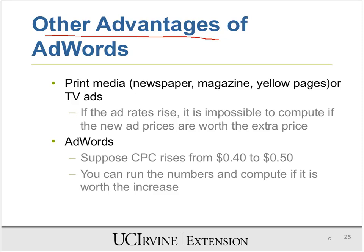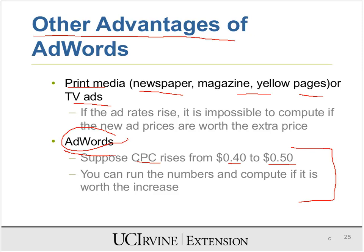You can also look at other advantages of AdWords compared to print media or TV. With print media or TV, if your rates increase, you cannot really compute ROI. But with AdWords, if your CPC cost goes from $0.40 to $0.50, you can immediately compute your ROI and see whether it makes sense. You can very precisely compute whether your ads are working. This feature is not available in any other kind of advertising — whether newspaper, magazine, yellow pages, TV ads, or billboards. AdWords allows you to compute your ROI, and that is one of its major advantages.